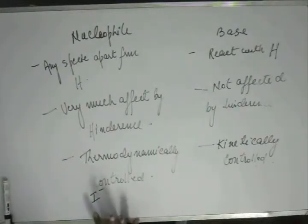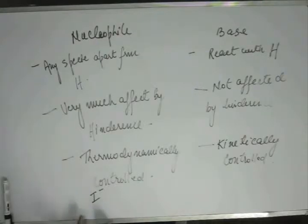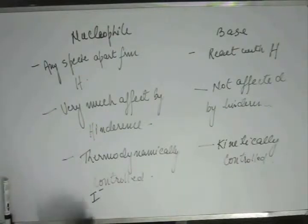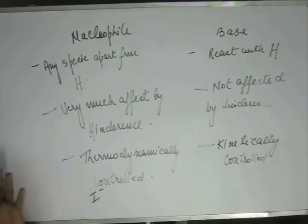Let's look at its stability. If this I⁻ is highly unstable, it would have less time to go for the reaction and to survive in the system, so this will be a base. If I⁻ is stable enough, it would be a nucleophile.